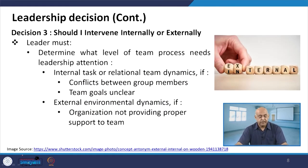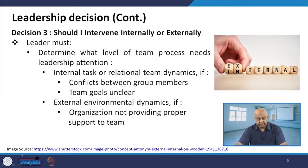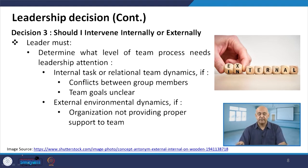Decision three: should I intervene internally or externally? The leader must determine what level of team process needs leadership attention — internal task or relational team dynamics. If conflicts between group members exist and team goals are unclear, then it is not clear what to do. External environmental dynamics arise if the organization is not providing proper support to the team — in that case, find out which intervention will work.